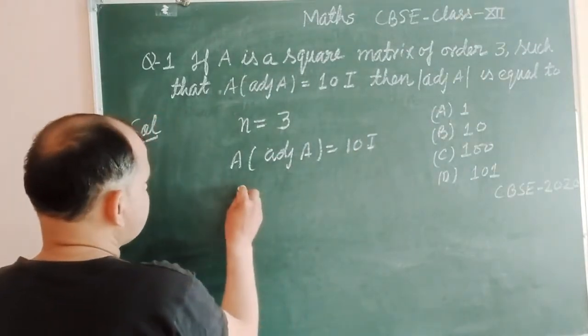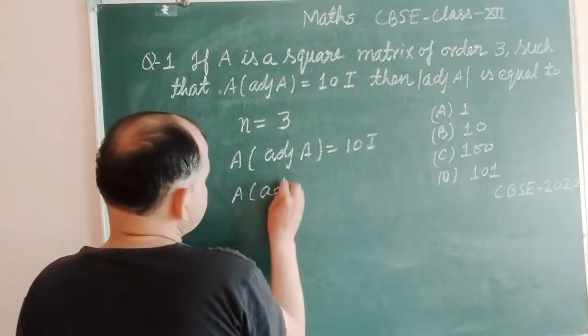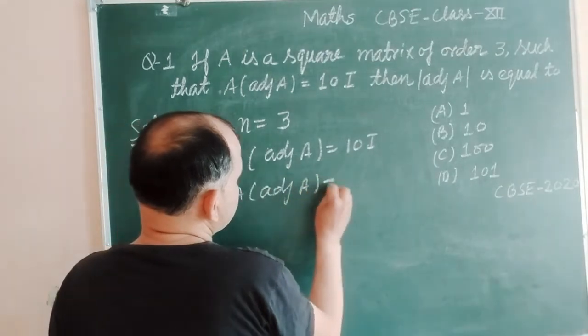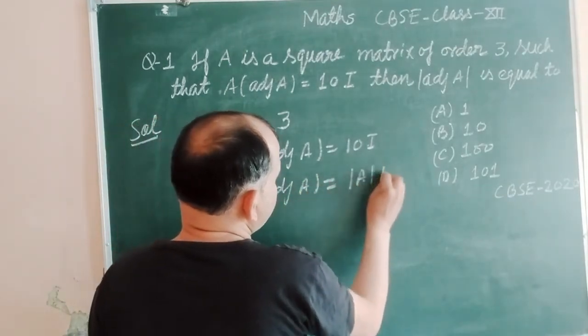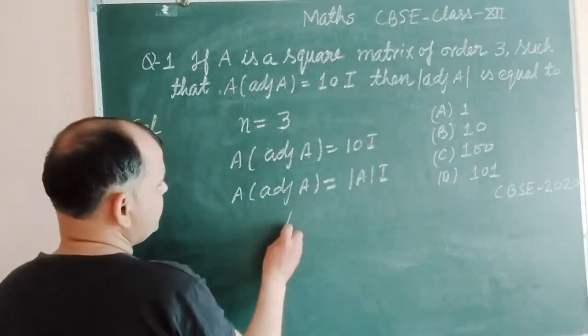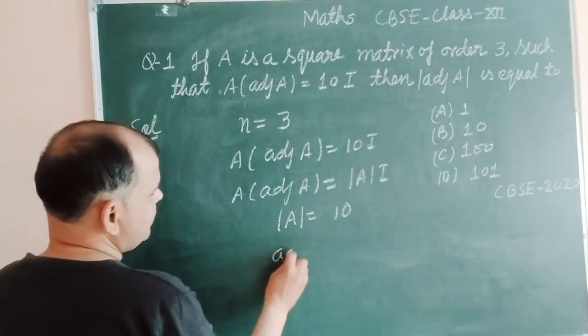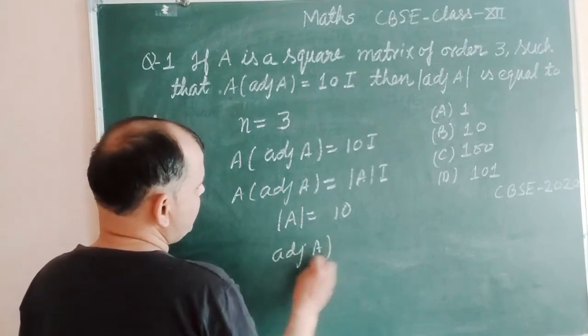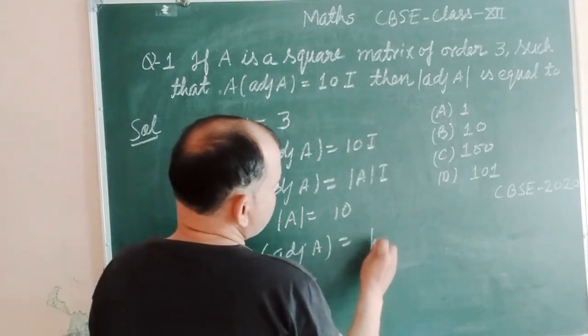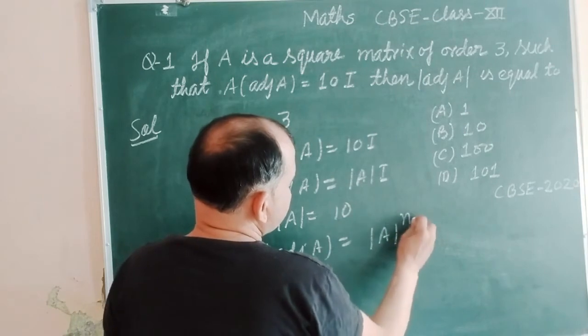So students, you know that A(adj A) = |A|I. From here, we got |A| = 10. And you know that |adj A| = |A|^(n-1).